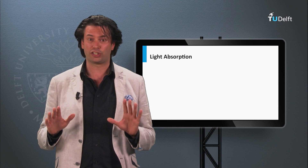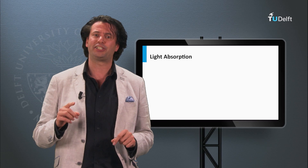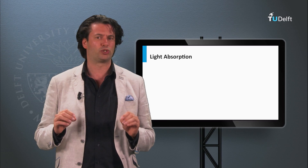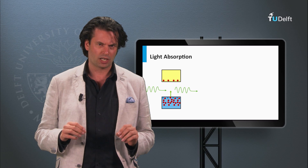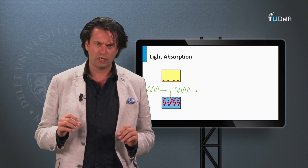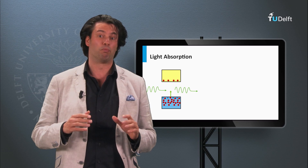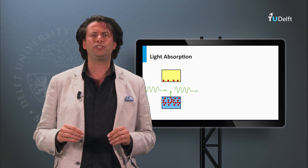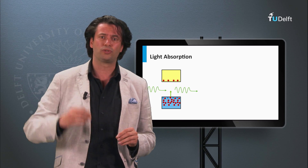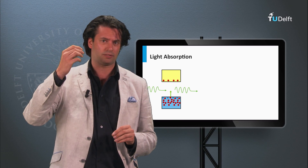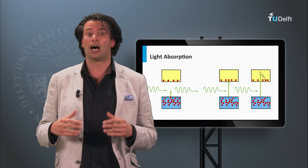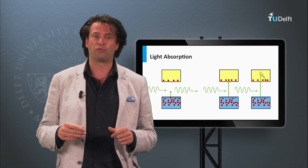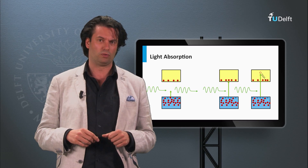Let's consider a single junction solar cell in which the absorber layer is a material with a certain bandgap energy. We know that when the energy of a photon is smaller than the bandgap, it is lacking the energy to excite an electron to the conduction band. When the energy is larger than the bandgap, absorption of the photon results in a mobile electron and hole.